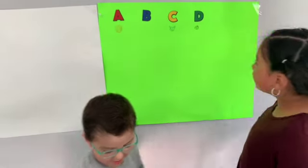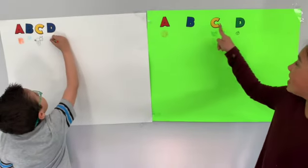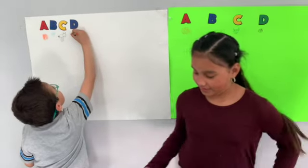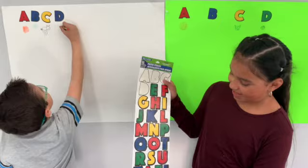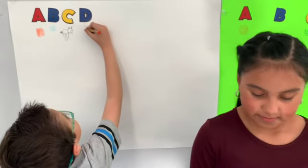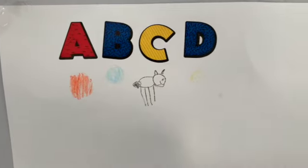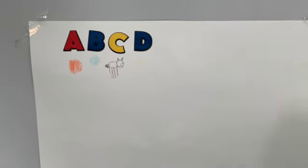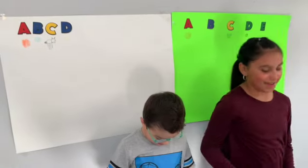I'm going to draw him in this color. A, B, C, D, E — E goes next! E is for... elephant! It's an elephant! Exactly!